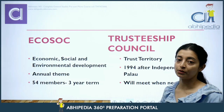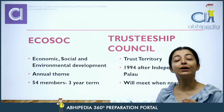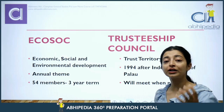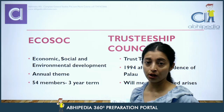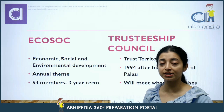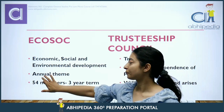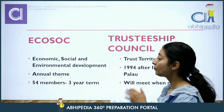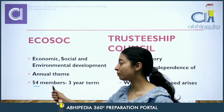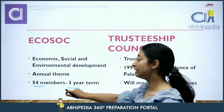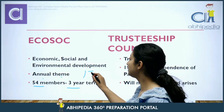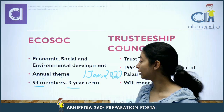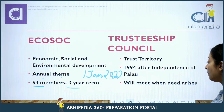Now let's come to ECOSOC — the Economic and Social Council. Its work is to coordinate and oversee the specialized agencies and other functions of the UN. It decides an annual theme every year and works in a focused way on that theme. ECOSOC has 54 members with a 3-year term. India became a member of ECOSOC from 1st January 2022.